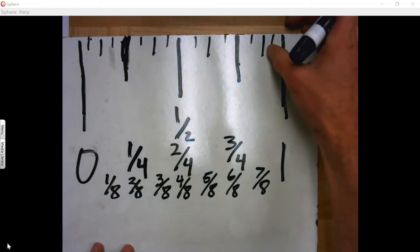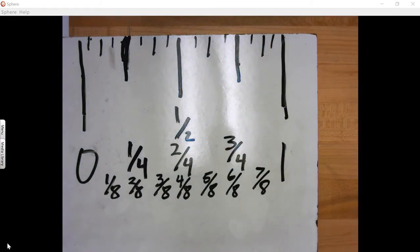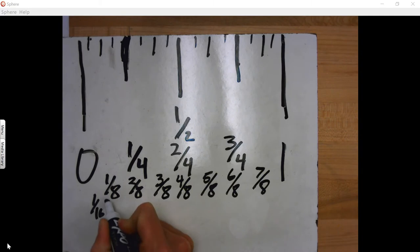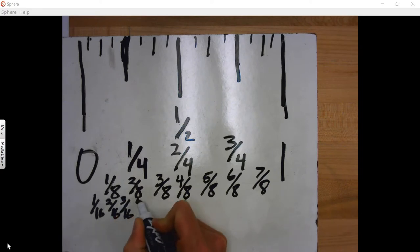So the smaller we get on our measurement, right, the more accurate our measurement is, the more segments there are in there. So now we have one-sixteenth. And then you have two-sixteenths. And then you have what? Three-sixteenths. And four-sixteenths.